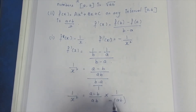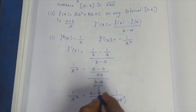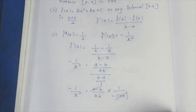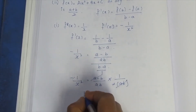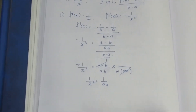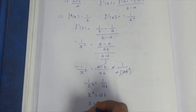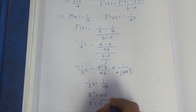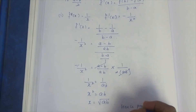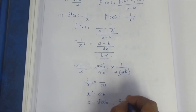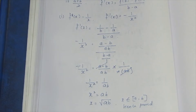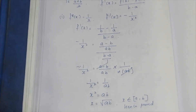After cancellation, (a - b) and (b - a) cancel with a sign change, giving -1/(ab). Setting f'(x) = -1/x² equal to -1/(ab), we get x² = ab. Taking the square root, x = √(ab). This is proved.